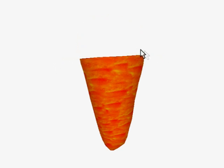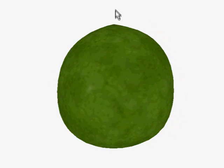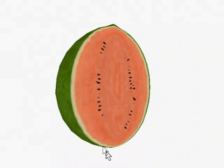In the remainder of this video, we show some of our results. The user can interactively cut and see the interior of the solid object. Our method is particularly suitable for modeling natural objects such as fruits and vegetables.